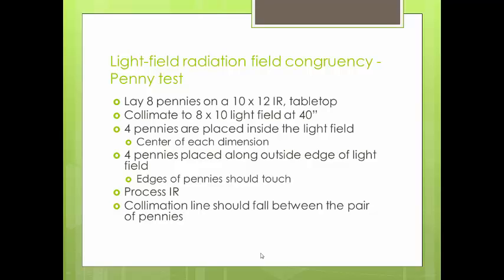The most common and inexpensive way to test light field radiation field congruency is the eight penny test. Lay a 10x12 image receptor table top and place eight pennies along the collimated field. Four pennies will be placed inside the light field — one on the center of each of the four sides — and one just outside the light field on the same four sides. Collimate to an 8x10 light field at a 40-inch SID.